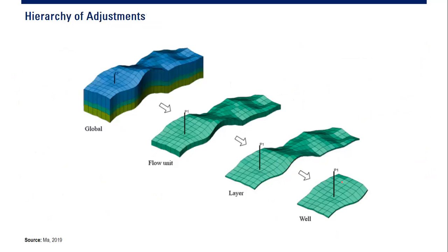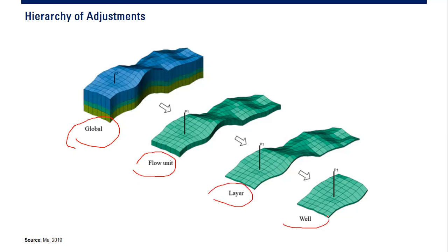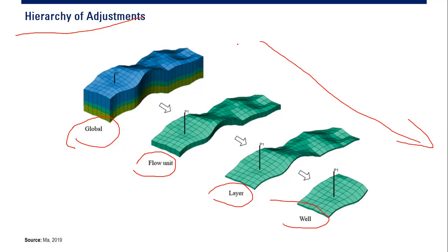If you want to do adjustment — to tweak properties to get matching — we need to follow a hierarchy of adjustment. First we adjust globally; if it still doesn't match, we go into more detail and check and modify the flow unit properties; if still not matched, we go layer by layer; and lastly we check and adjust well parameters. This is the recommended hierarchy of adjustment.